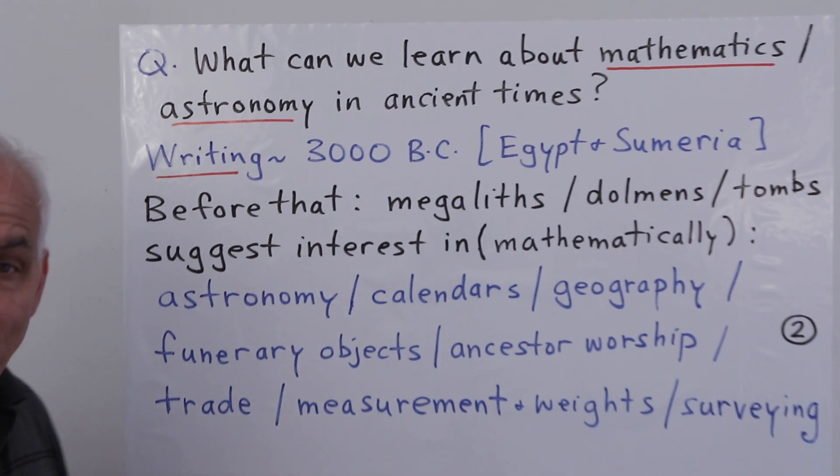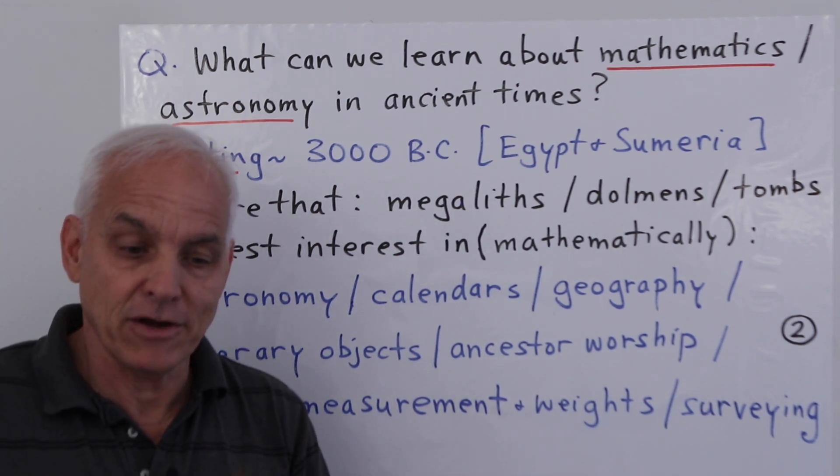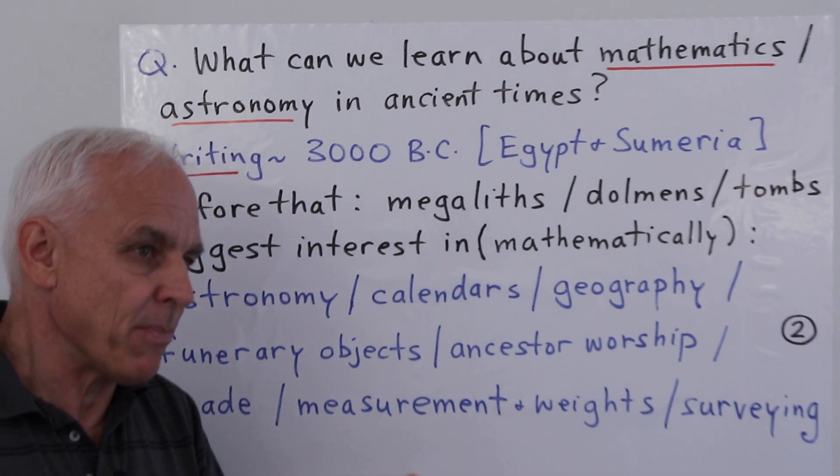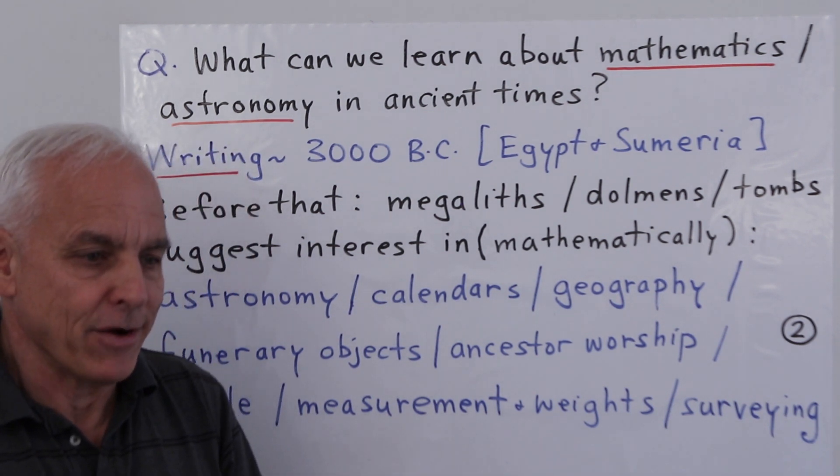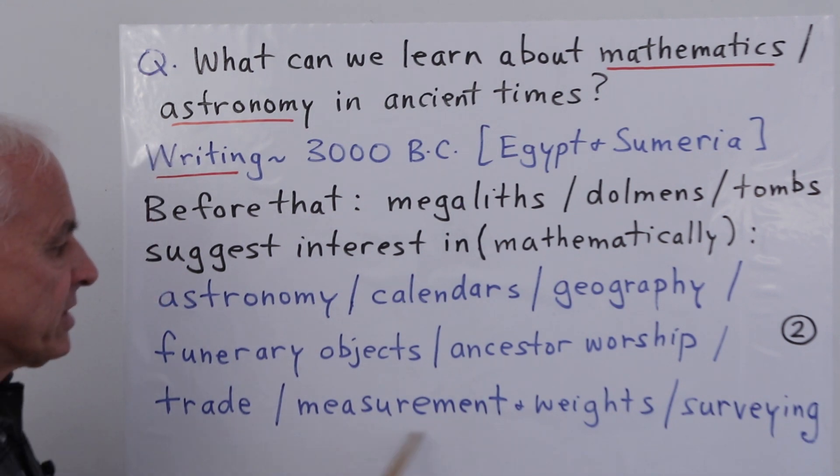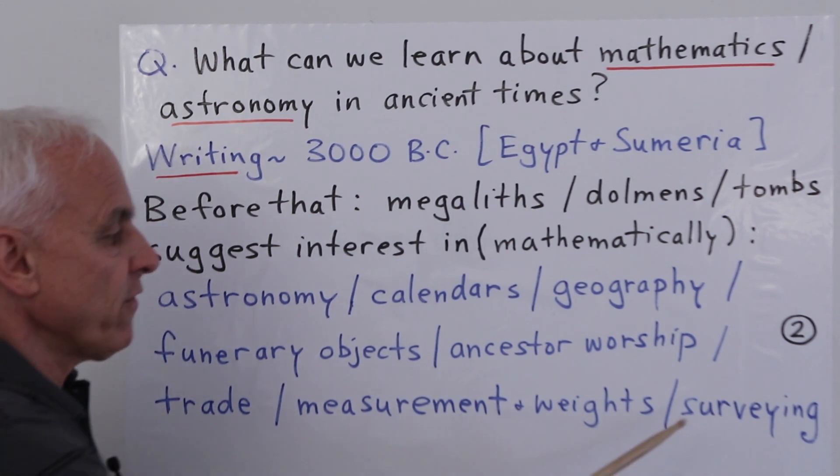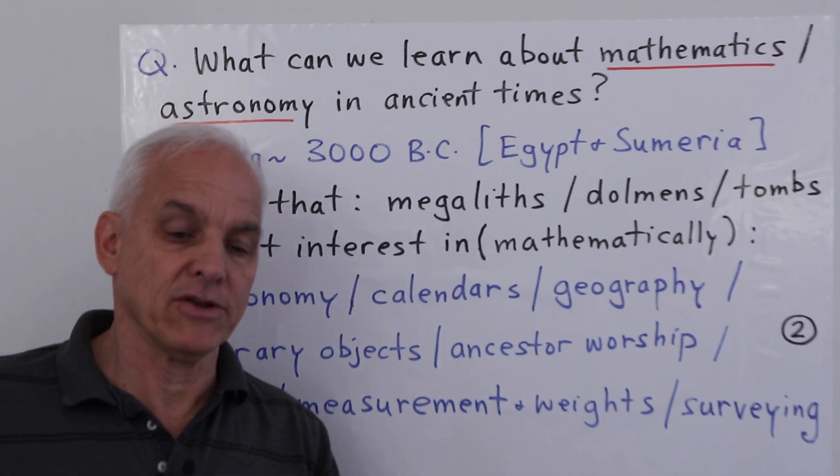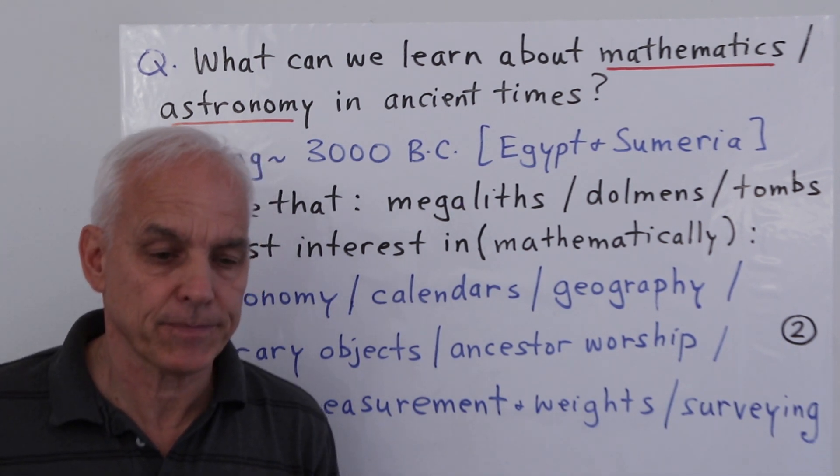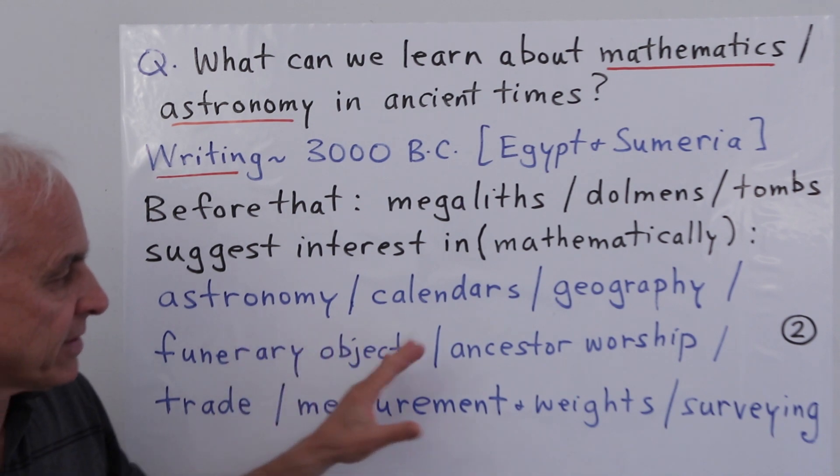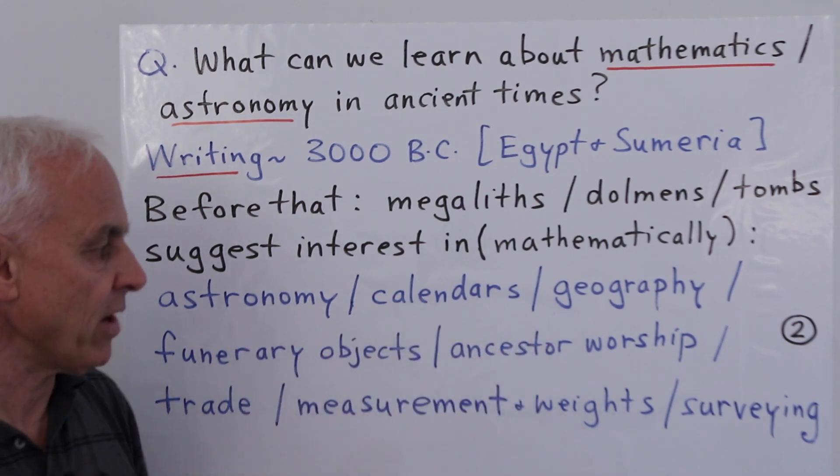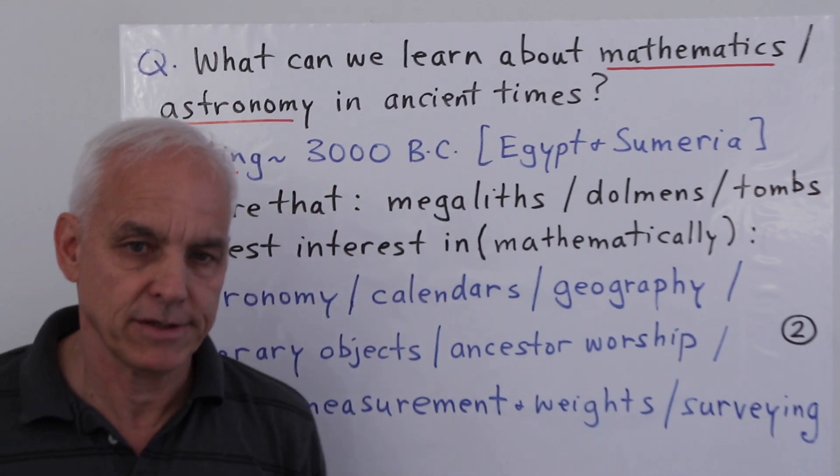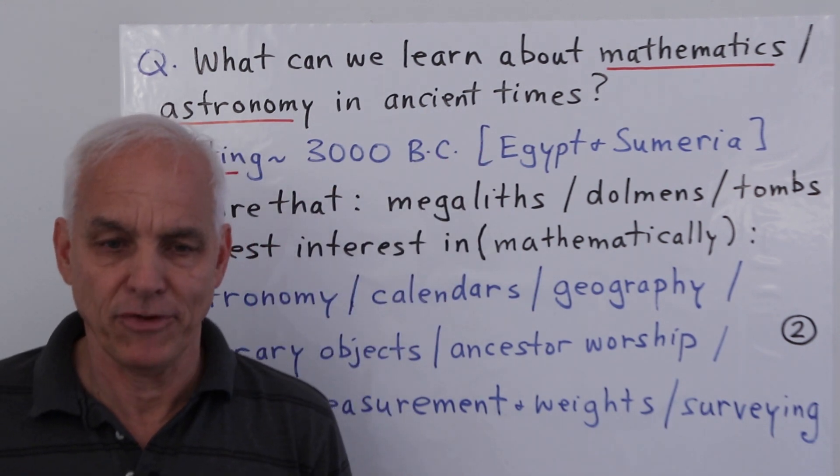Of course, there would have been trade even from early times, so they would have had some kind of bartering or appreciation for quantity. Measurement and weights and surveying would have also been important once people became agrarian and started cultivating fields. These are some of the aspects that have a mathematical aspect that we can look for in ancient civilizations, the remnants of.